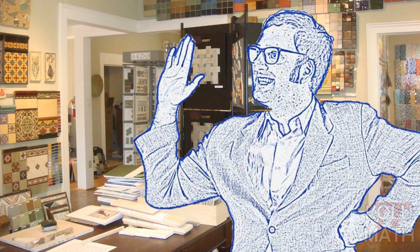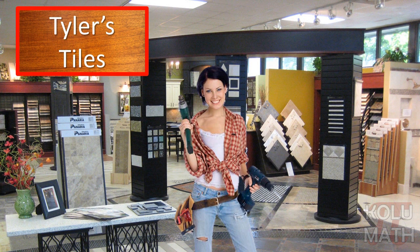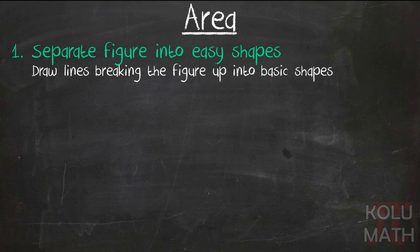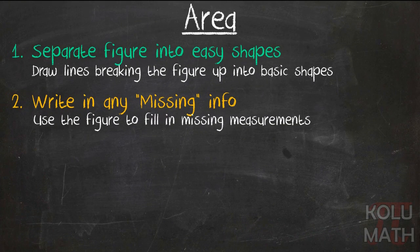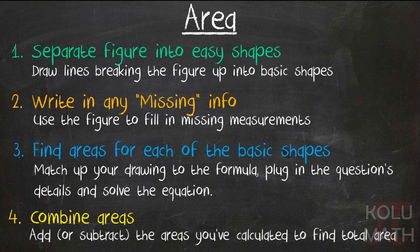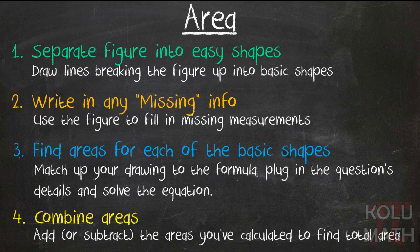Now we can see Tyler feels great about that. All right. Let's review the process. Separate the figure into shapes, write in any missing info, find the area for each of those basic shapes. We add or subtract the areas we found to find the total area.